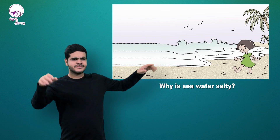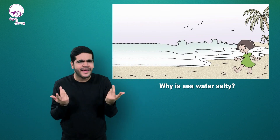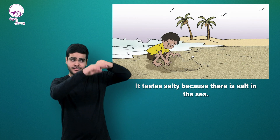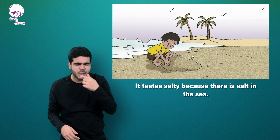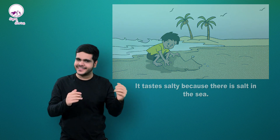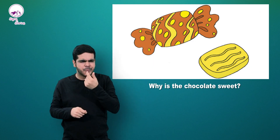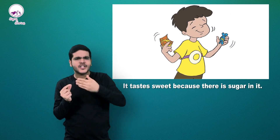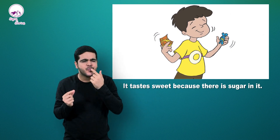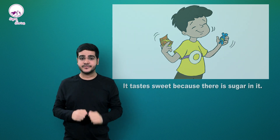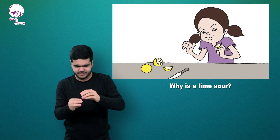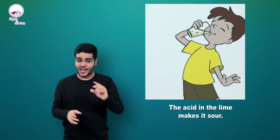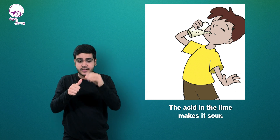Why is sea water salty? It tastes salty because there is salt in the sea. Why is the chocolate sweet? It tastes sweet because there is sugar in it. Why is lime sour? The acid in the lime makes it sour.